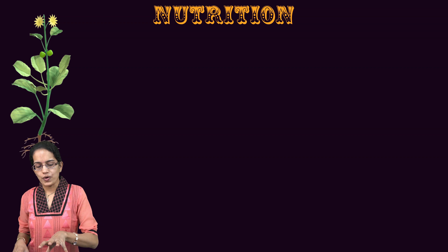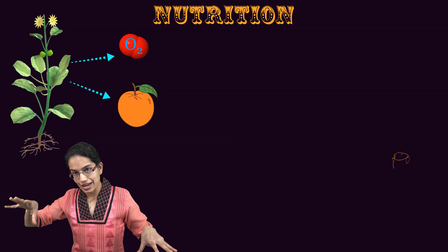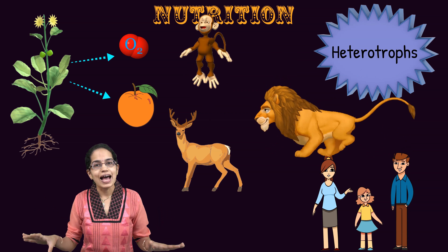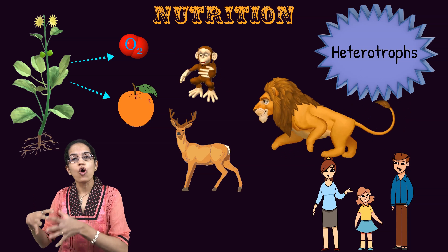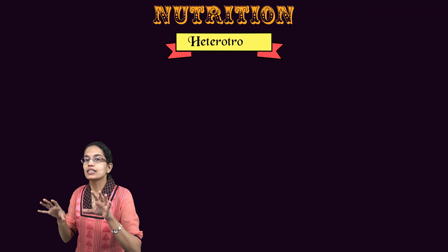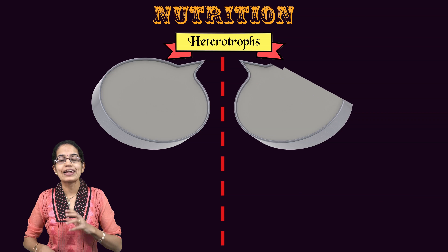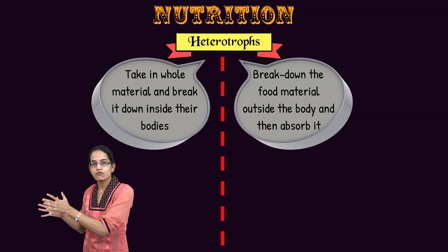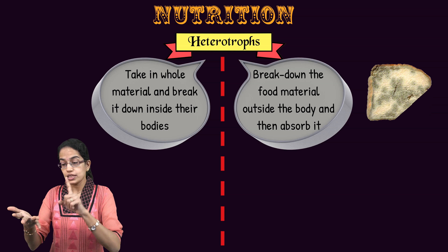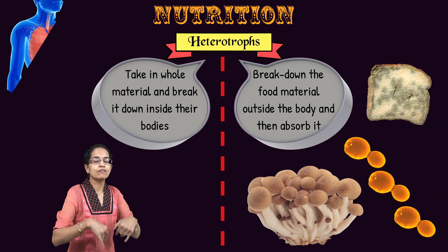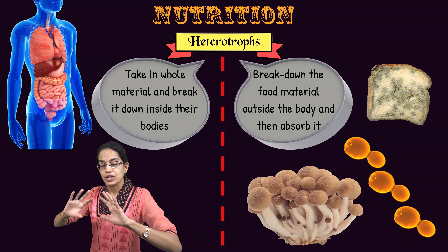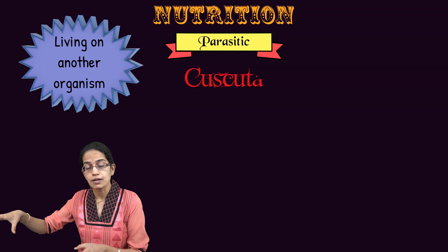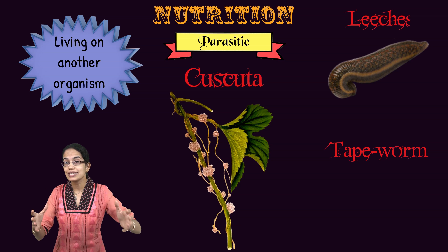Plant produce is utilized by higher-order organisms classified as heterotrophs — organisms that cannot produce their own food and depend on autotrophs or other heterotrophs for survival. Heterotrophs can consume food in two ways: digest it within the body, or break down food outside and then consume it. Examples of external digestion include bread molds, yeast, and mushrooms. There are also parasitic organisms such as Cuscuta, leeches, and tapeworms.